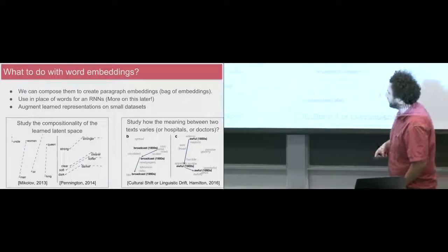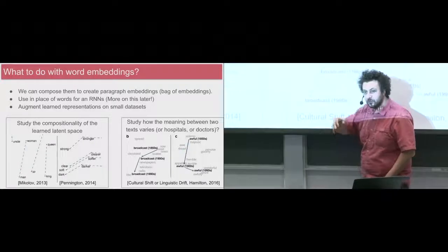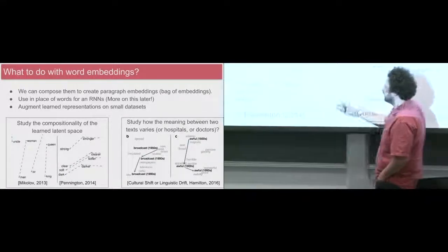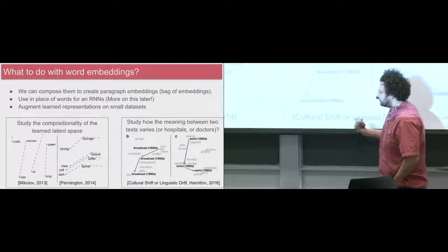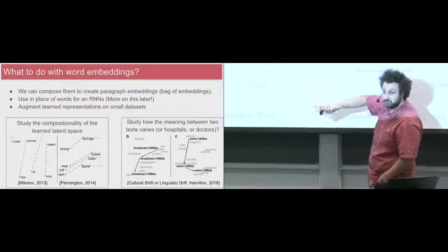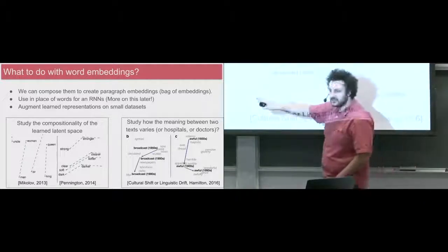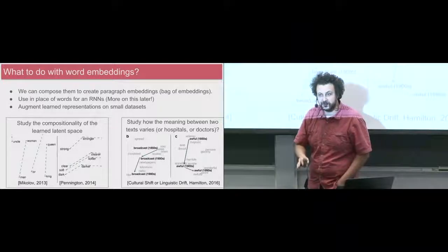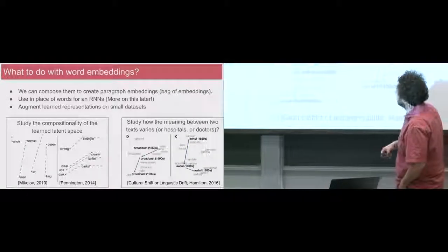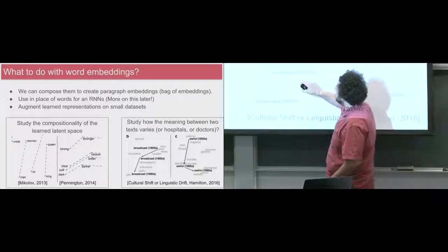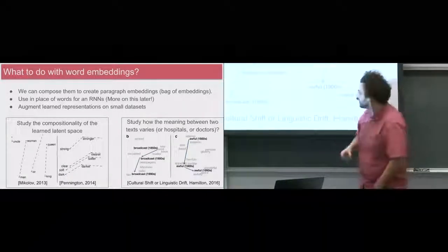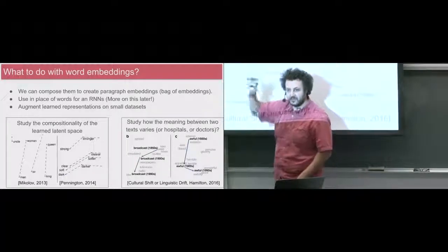Later, people realized you can also use this to look at relationships like dark/darker and soft/softer — you get properties of the language you're operating on. These models are trained on very large databases for English. We can play with the idea of what data they're trained on to build representations that tell us different things. For example, work by Will Hamilton looks at the way words change over time by examining word embeddings in text over time.